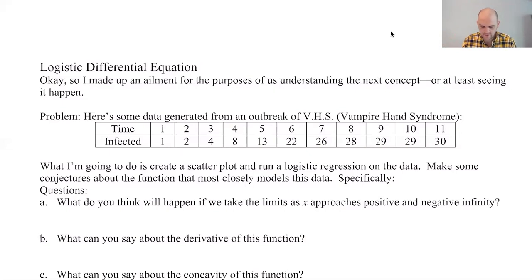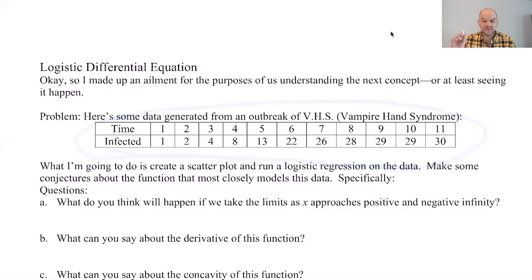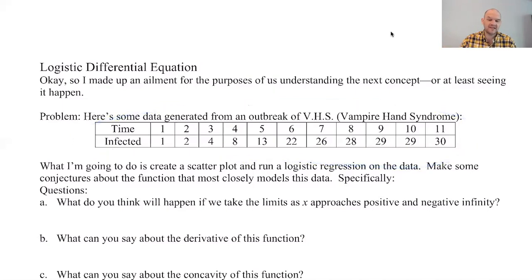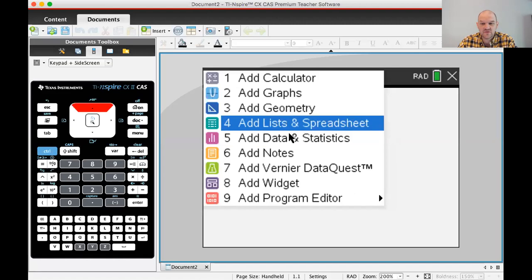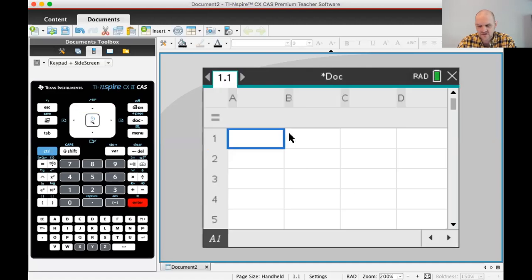So in case that didn't work out well for you, here's some other data that we can use. What I'm going to do pretty quickly is put this in my calculator so we can look at it. I'm going to switch over to the calculator and make a scatter plot. I'm going to use list in spreadsheets, probably the most underutilized thing on the calculator. So I need time next to A, and here I'm going to type infected.